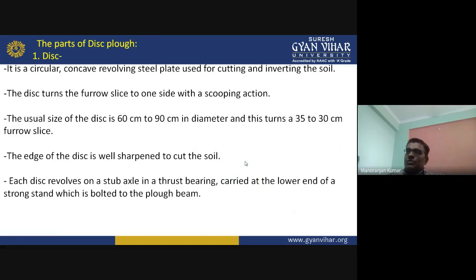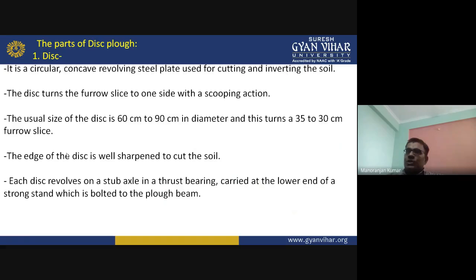The disc is a circular concave revolving steel plate used for cutting and inverting the soil. The disc turns the furrow slice to one side with a scooping action. The size of the disc is generally 60 to 90 centimeters in diameter, turning a 35 to 50 centimeter furrow slice. The edge of the disc is sharp to cut the soil. Each disc revolves on a stub axle in a thrust bearing carried at the lower end of a strong stand bolted to the plough bottom. In the disc plough, discs are attached separately on the hub.